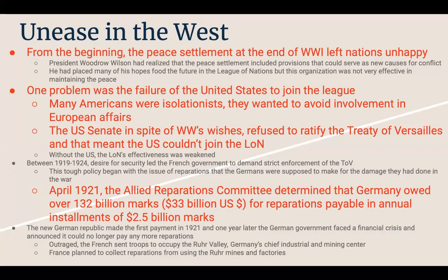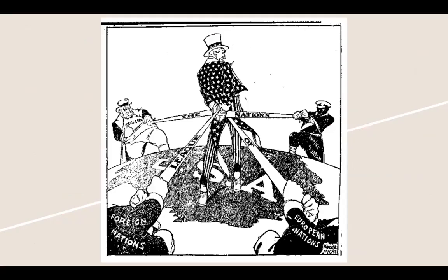Between 1919 and 1924, the desire for security led the French government to demand strict enforcement of the Treaty of Versailles. This tough policy began with the issue of reparations that Germans were supposed to pay for the damage done in the war. The Allied Reparations Committee determined that Germany owed over 132 billion marks — that's 33 billion dollars — payable in annual installments of about two and a half billion marks a year.